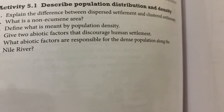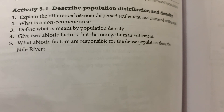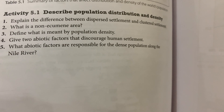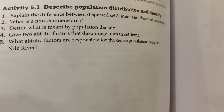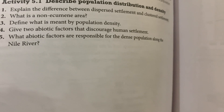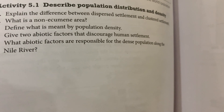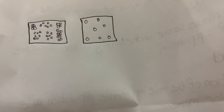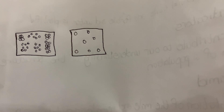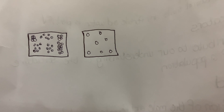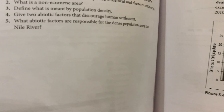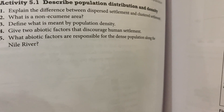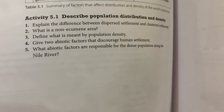Now we're going to do this activity. The first question: explain the difference between dispersed settlement and clustered settlement. A dispersed settlement is where people live far apart from each other, and a clustered settlement is where people are close to each other. I made a quick drawing — the first would be clustered and the second dispersed because the people are far apart.